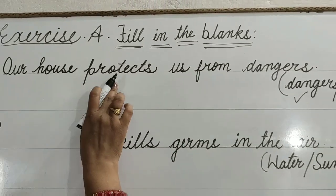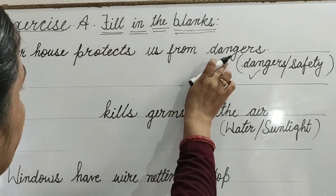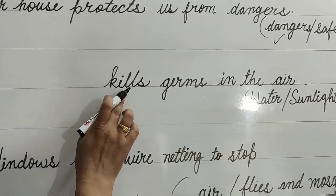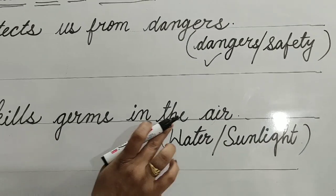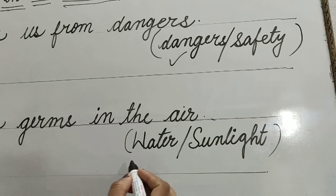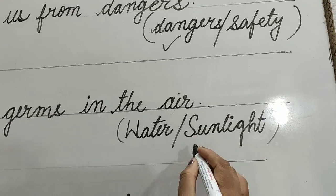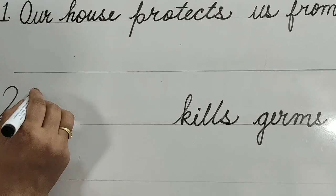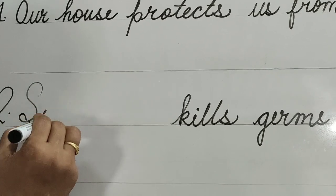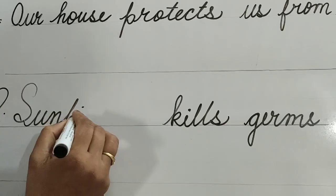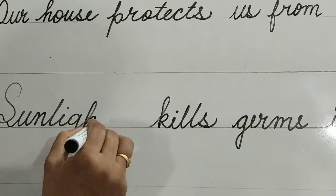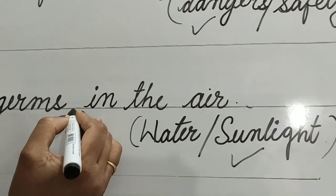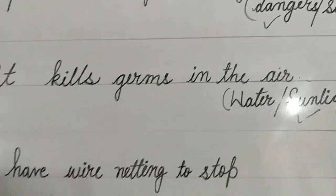Our house protects us from dangers. Question 2: Dash kills germs in the air. The options are water or sunlight. Sunlight is the correct option, so we fill in S-U-N-L-I-G-H-T. Sunlight kills germs in the air.